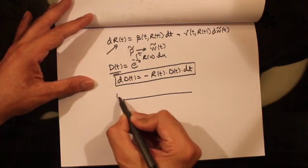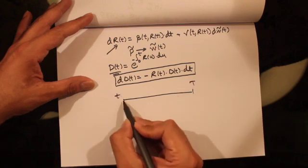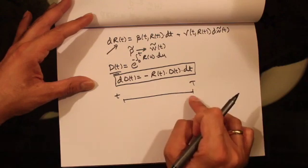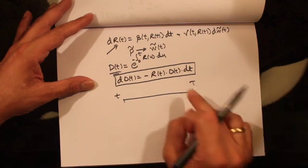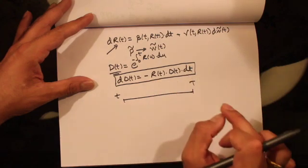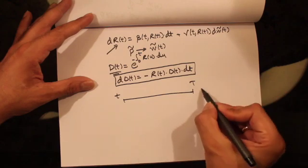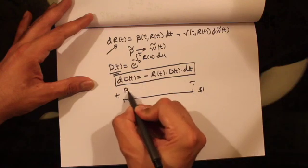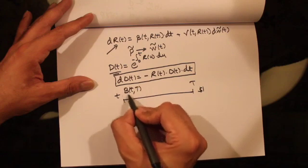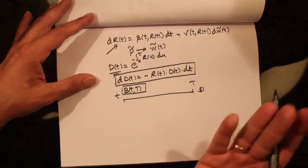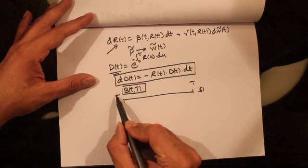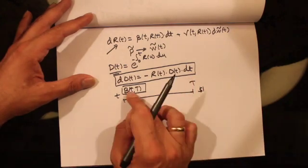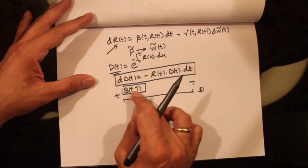We already know what a zero coupon bond is. If you are standing at time small t and the zero coupon bond matures at time capital T, we get the face value back at time T. Let's assume the face value is one dollar, so we get one dollar at time T. We need to find the value of the zero coupon bond at time small t, and since it's a zero coupon bond it doesn't pay any coupon between time t and T — it's a very simple instrument.